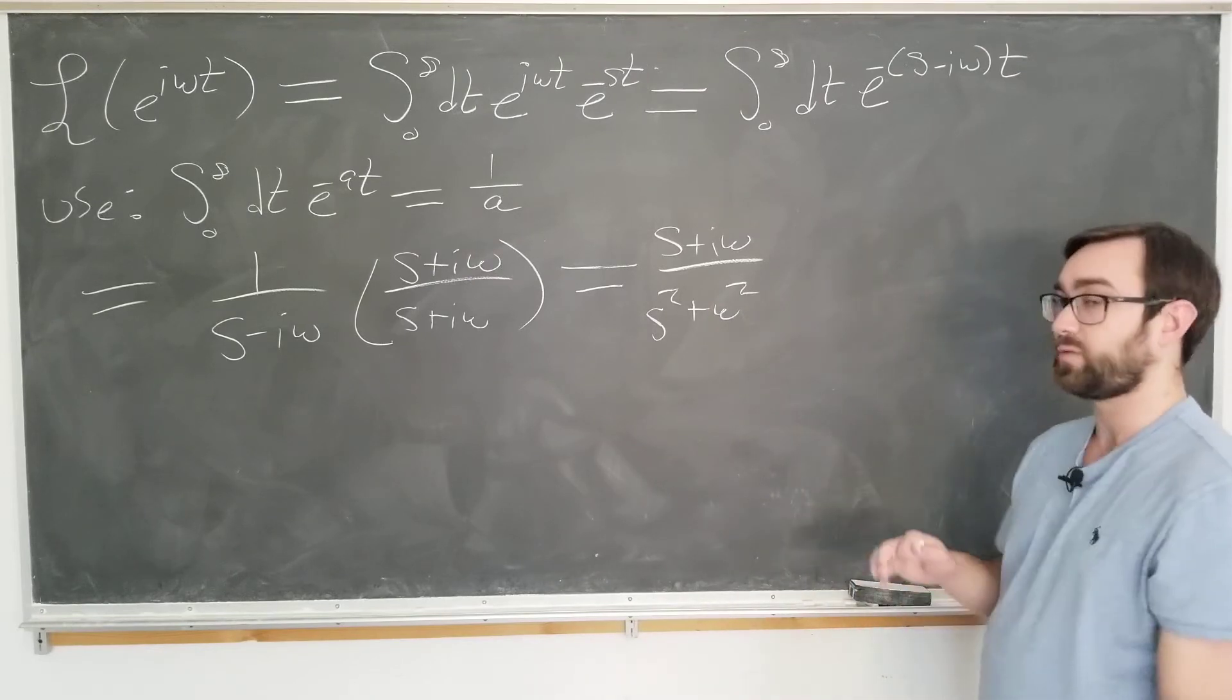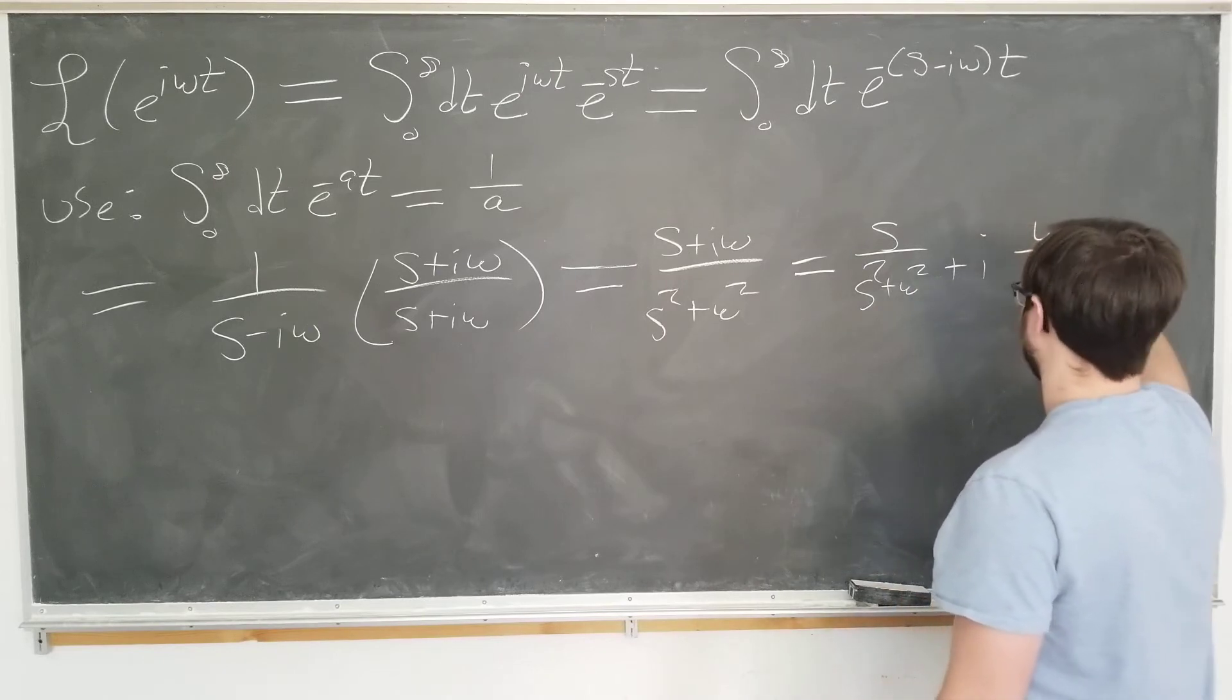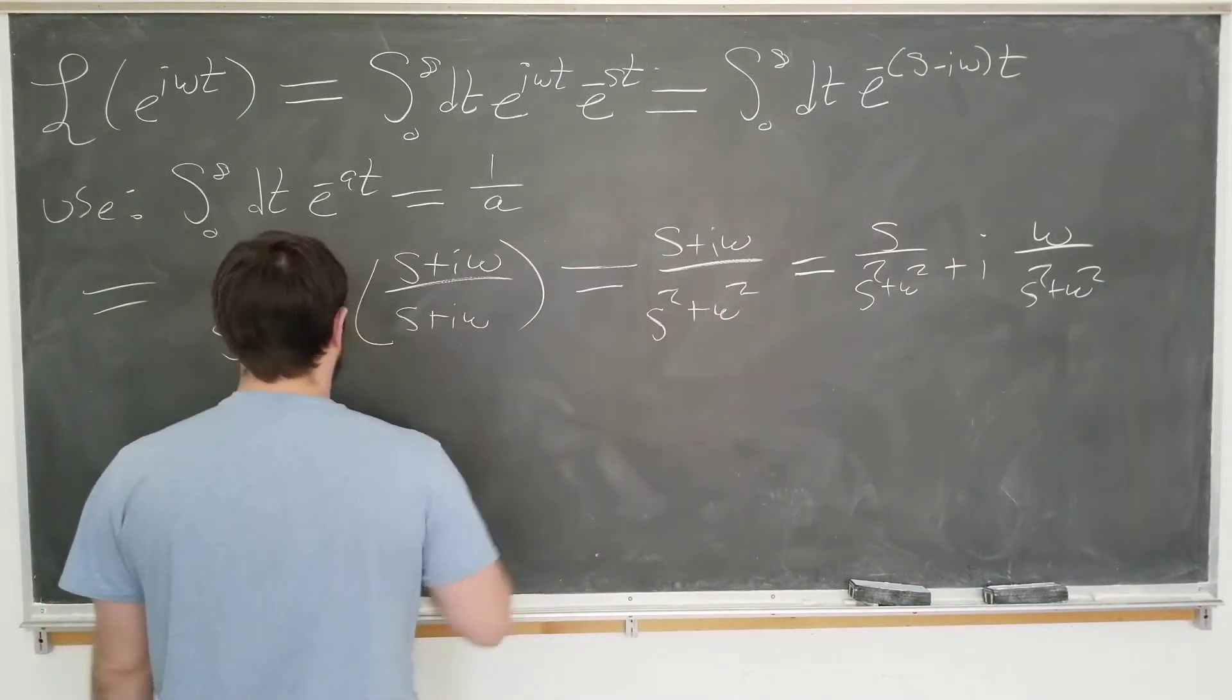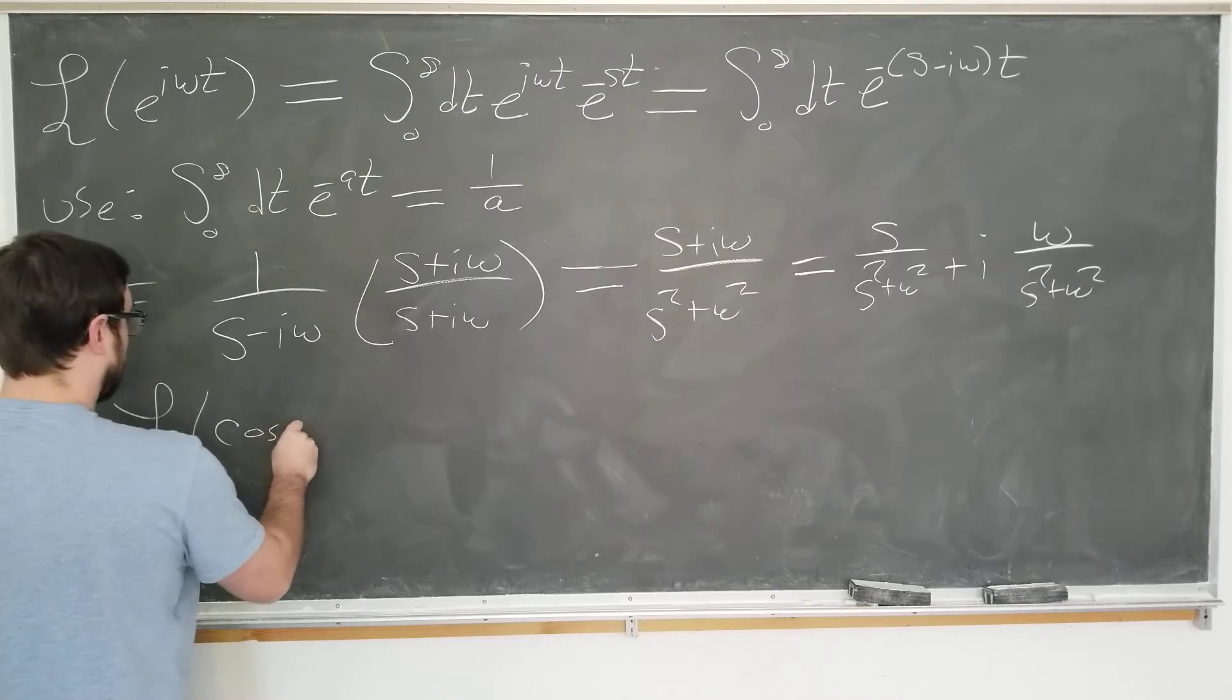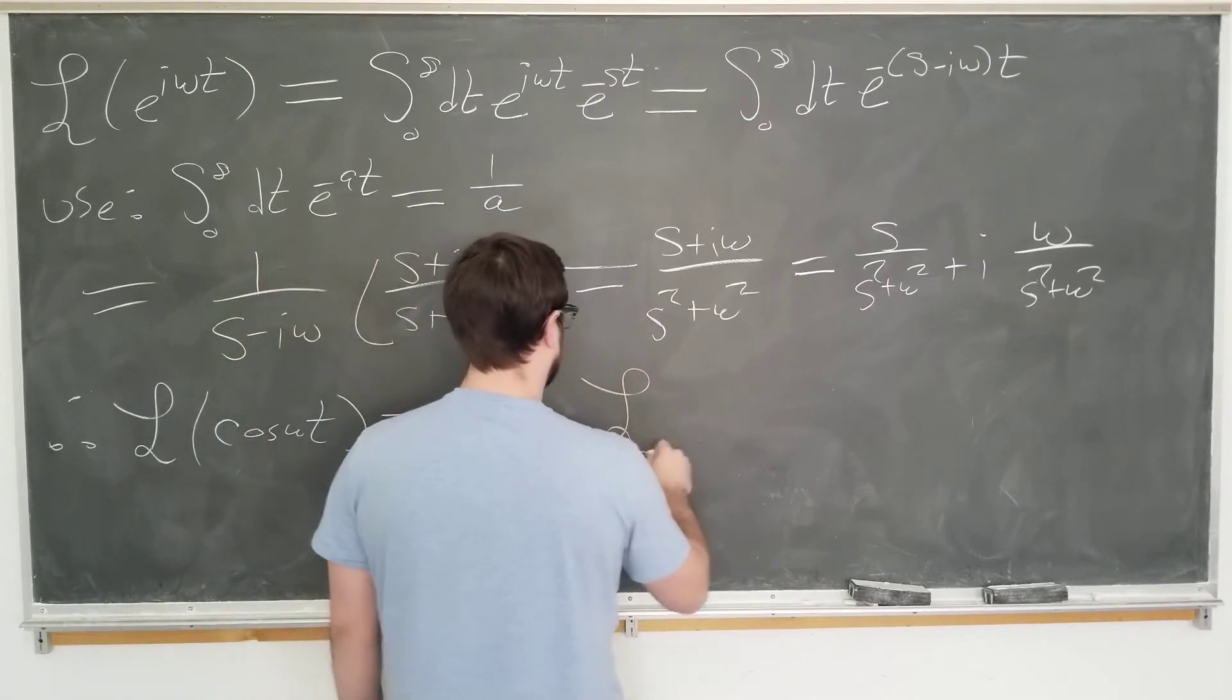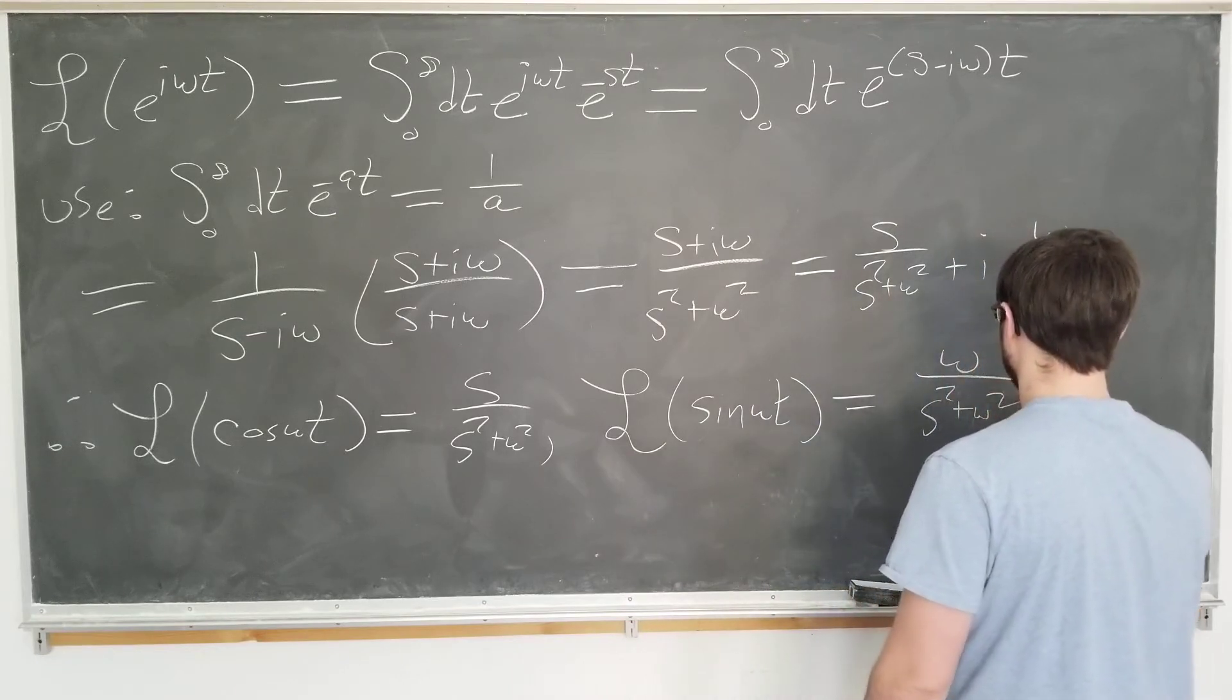And now we can separate this into the real and imaginary parts pretty easily. Here comes s over s squared plus omega squared plus i times omega over s squared plus omega squared. And now upon equating real and imaginary parts, we can conclude the Laplace transform of cosine omega t is the real part here, s over s squared plus omega squared. The Laplace transform of sine omega t is the imaginary part. And there we have it.